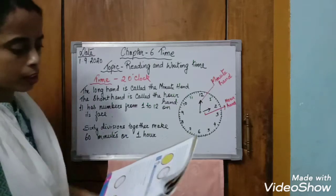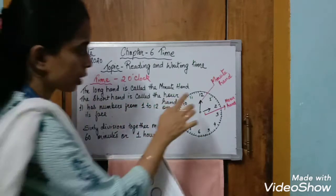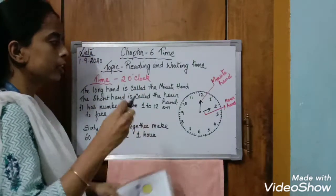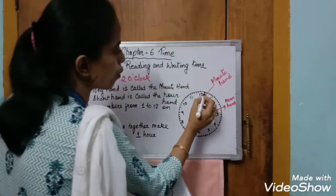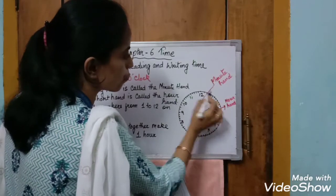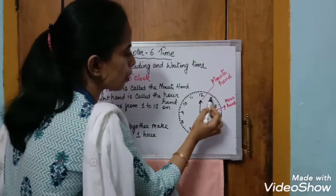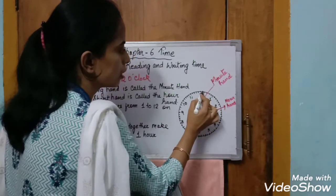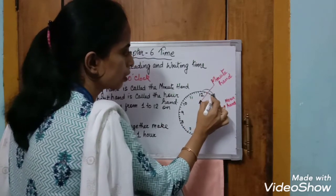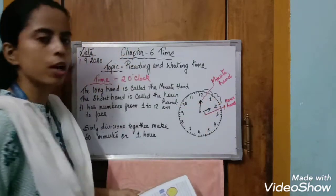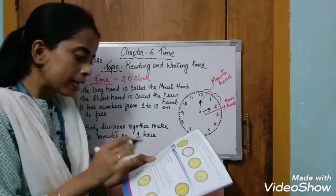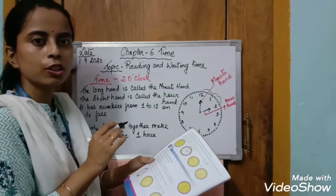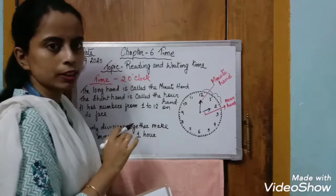Between twelve and one you can clearly see there are four lines — one, two, three, four. Again, between one and two there are four lines. These four lines divide the space between two consecutive numbers into five equal parts. So if twelve starts at zero, then one represents five, two represents ten, three represents fifteen, and so on.